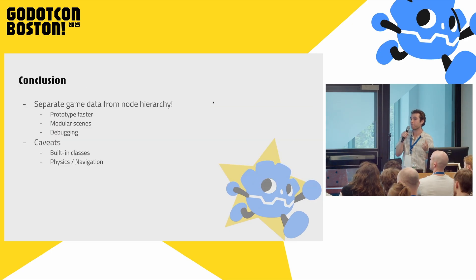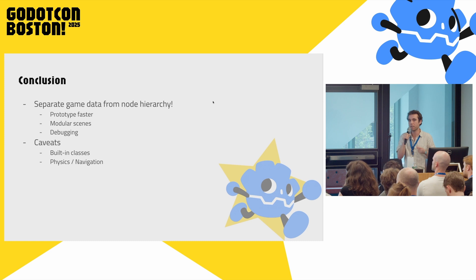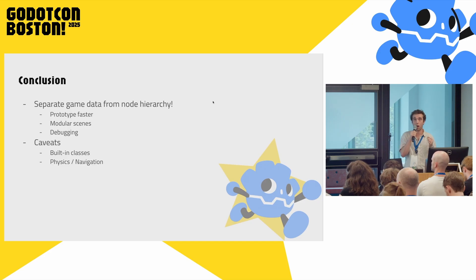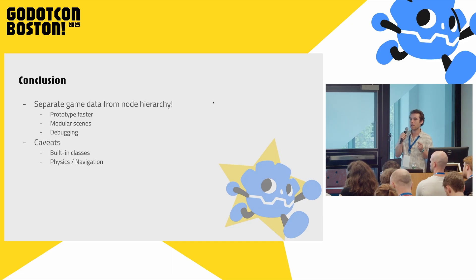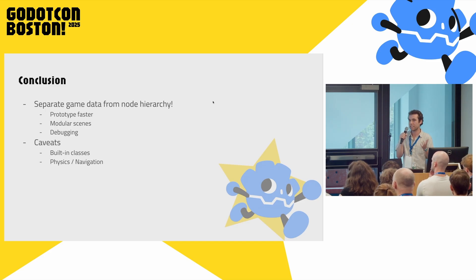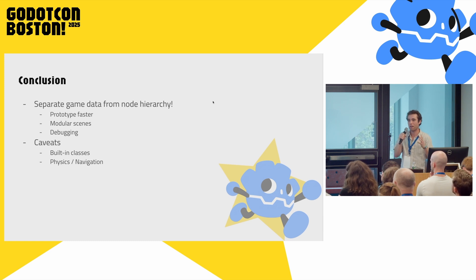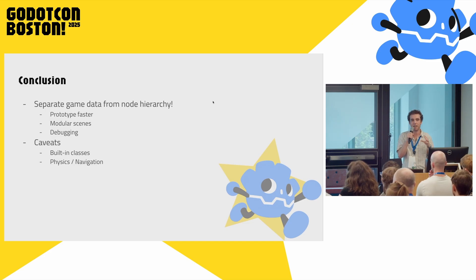In conclusion, I think there's a lot of value in separating your game's data from your node hierarchy. It enables you to prototype quickly — you can focus on your state transitions, then later revisit what the node hierarchy looks like and make sure it's styled correctly. It also allows you to create modular scenes, because your scenes don't care about what other nodes are present in the scene tree. And it can be useful for debugging, because you can export all of your game's state and reload it later to check if you fixed a bug. There are a couple of caveats — built-in classes obviously expect certain data to be present, and this is not a one-size-fits-all solution. But there are a lot of use cases for which using custom resources to synchronize data can be really valuable.